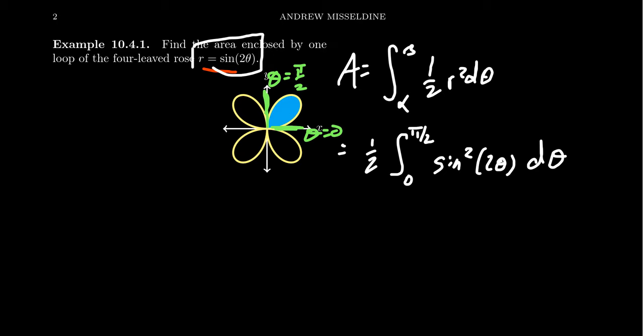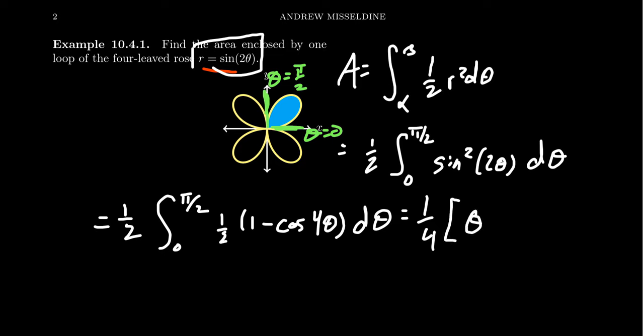We're going to integrate this with respect to theta. This is a trigonometric integral, but we have this skill set. We need to do the half angle identity. As we go from zero to pi halves, we can replace sine squared with one half times (1 - cosine of four theta) d theta. Now this thing is ready to go. The one halves combine, and you get one-fourth. Integrating 1 - cosine of four theta, you get one-fourth theta minus one-fourth sine of four theta, evaluated from zero to pi halves.